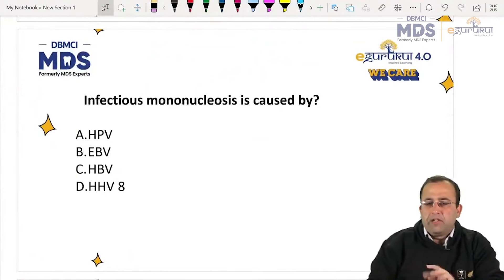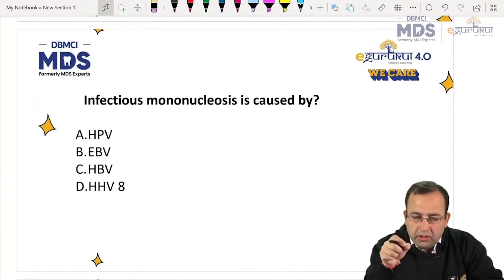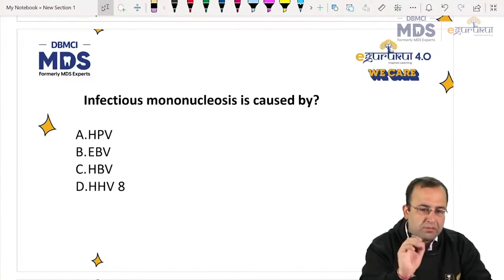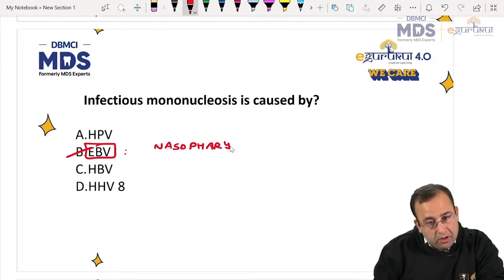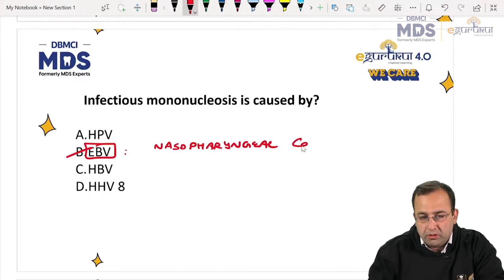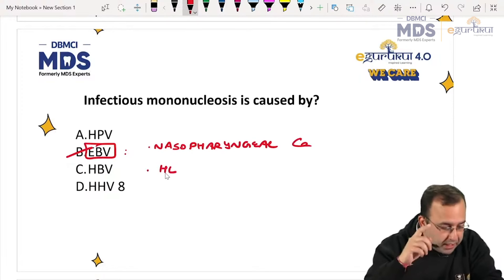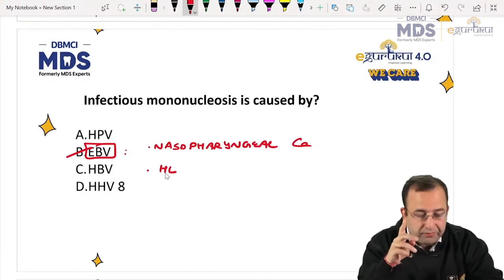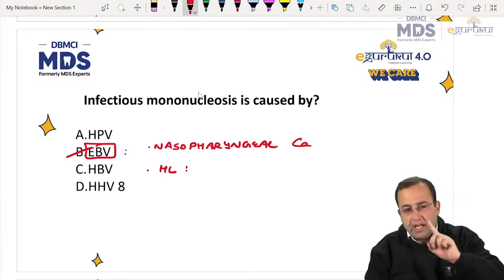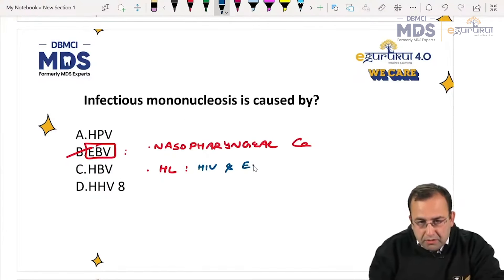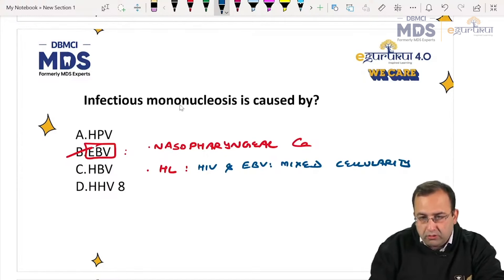Infectious mononucleosis is caused by Epstein-Barr virus. Other than infectious mononucleosis, EBV is also associated with nasopharyngeal carcinoma — very important and a recent PYQ — and Hodgkin's lymphoma. Hodgkin's lymphoma is associated with both HIV and EBV. The most common type is mixed cellularity Hodgkin's. EBV is also associated with non-Hodgkin's lymphoma — specifically Burkitt's lymphoma.